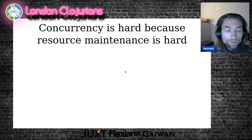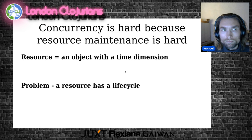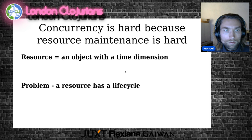What is resource management? In my opinion, this is the main reason why concurrency is hard. A resource is an object with a time dimension. Because it has a time dimension, it also has a life cycle. It has an extent that is indefinite and therefore you need to explicitly say when it starts and when it ends.